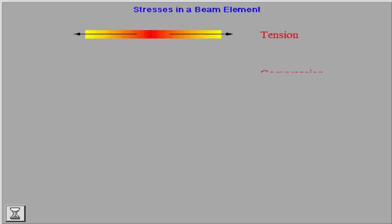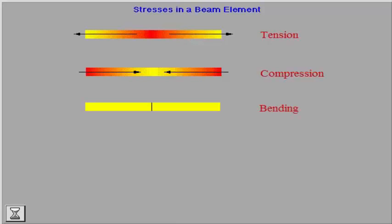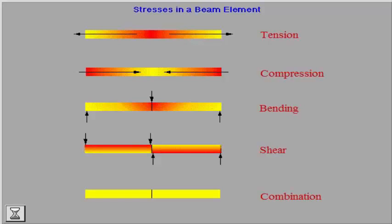When forces are acting in a longitudinal direction of a beam, it will give stress in tension or compression. If a force is acting vertically on the same beam, it will give a bending stress and a shear stress. If forces are acting both longitudinally and vertically on the same beam, it will give a combination of stresses.